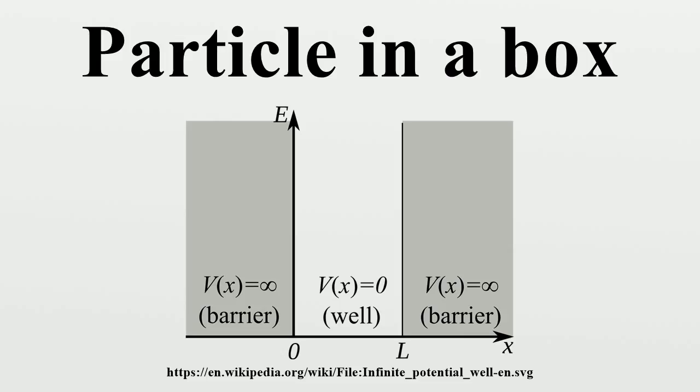The size of the wave function at a given position is related to the probability of finding a particle there. The wave function must therefore vanish everywhere beyond the edges of the box. Also, the amplitude of the wave function may not jump abruptly from one point to the next.